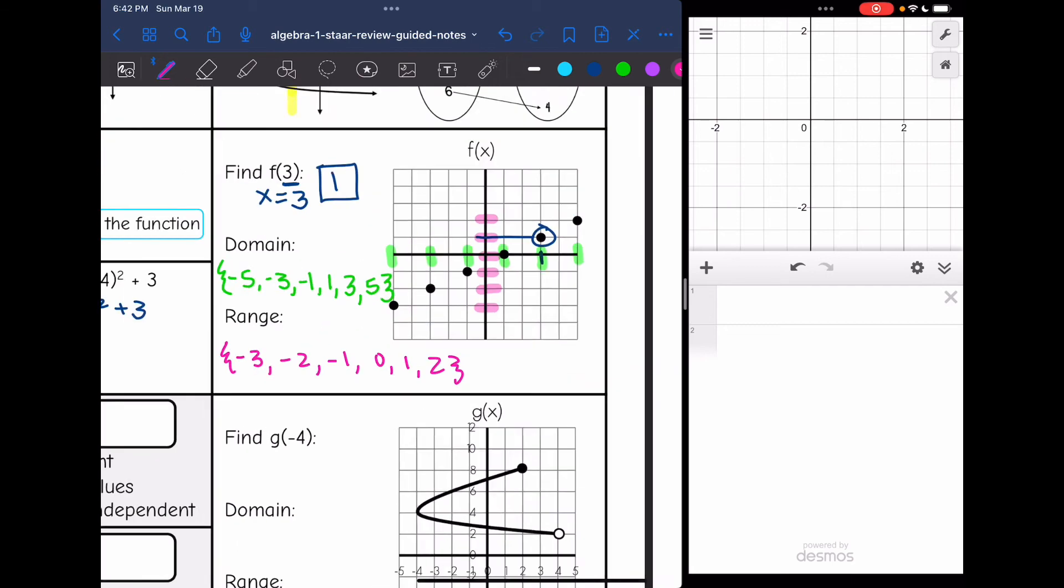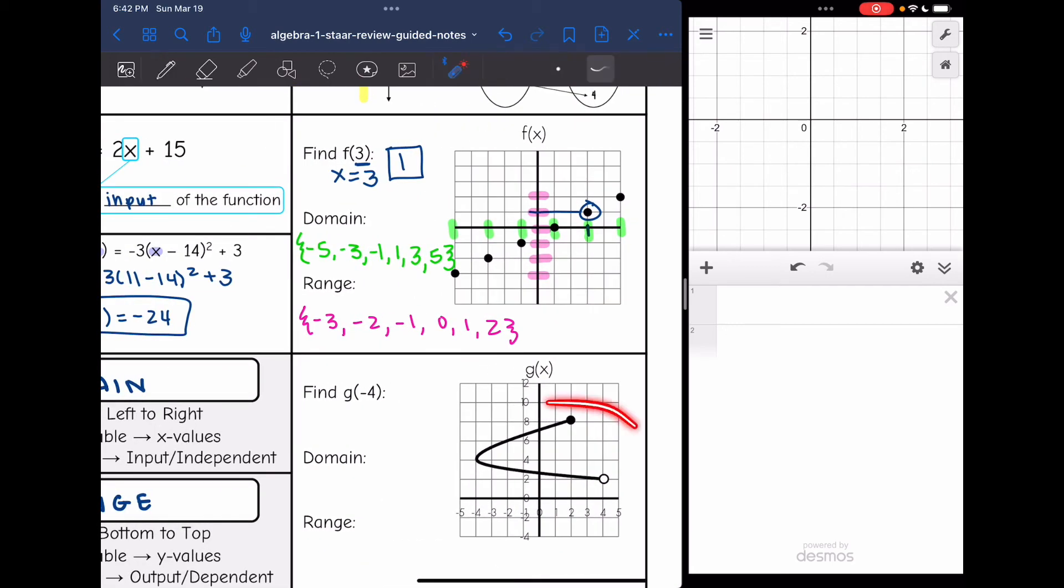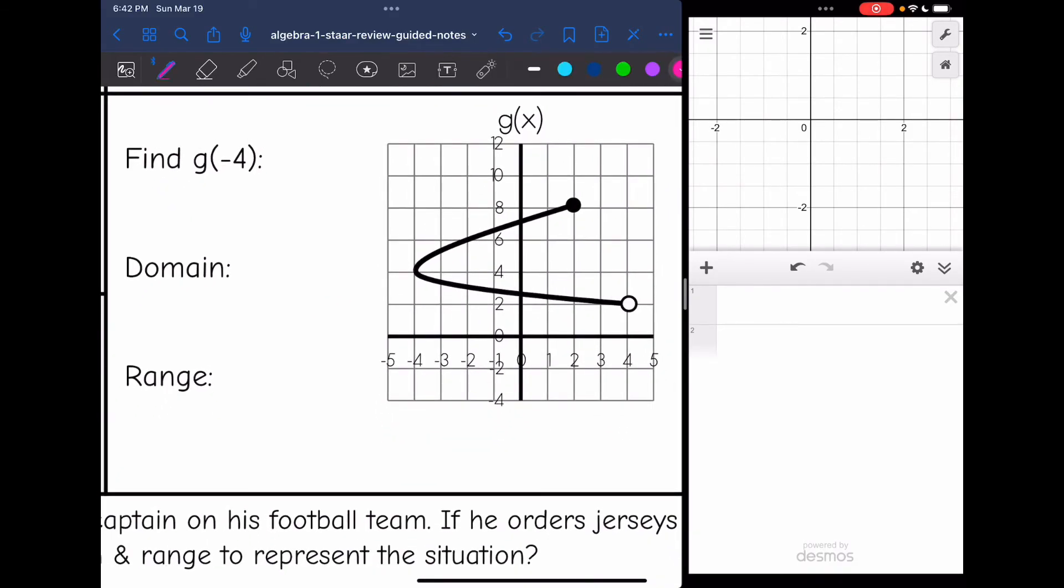Then this graph is connected. I would not lift my pencil up when drawing that graph, so it is continuous. So I'll be writing my domain and range with inequalities. But evaluating the function for g(-4) is the same. They gave us an x value where x equals -4, and they want us to go find that output. So x equals -4 is right here, and that matching y value is positive 4. So g(-4) is positive 4.